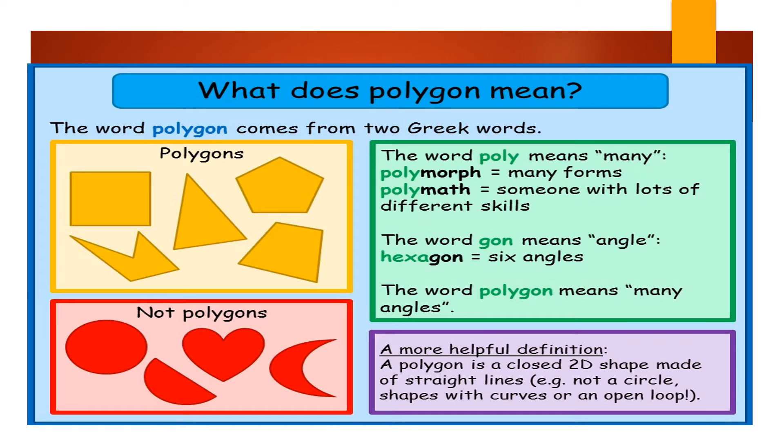The word polygon means many angles. A more helpful definition: a polygon is a closed two-dimensional shape made of straight lines, for example not a circle, shapes with curves, or an open loop.